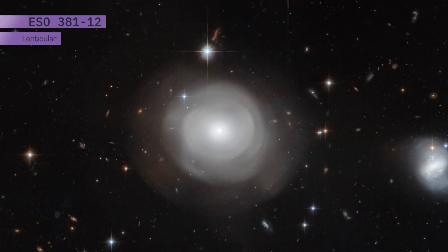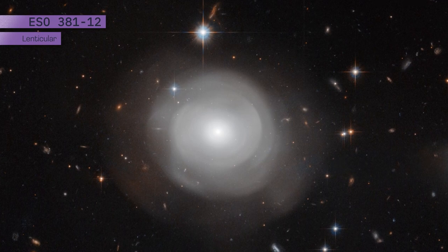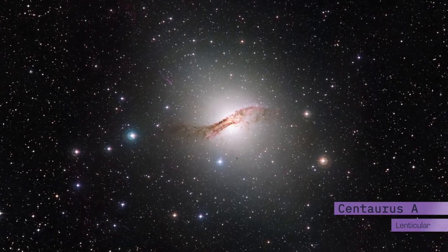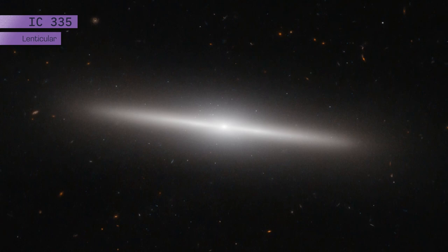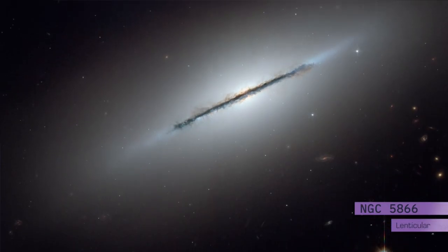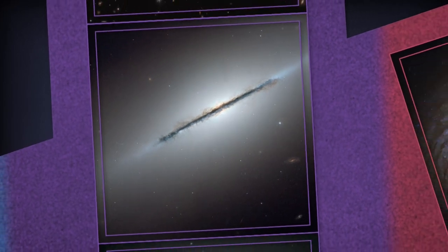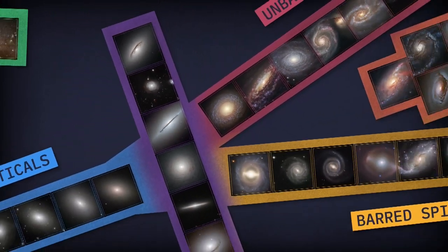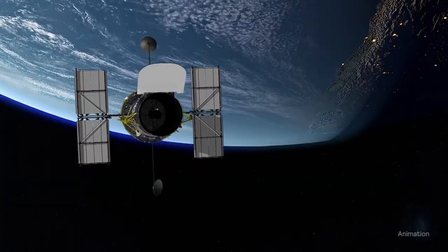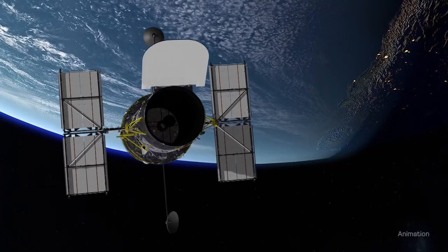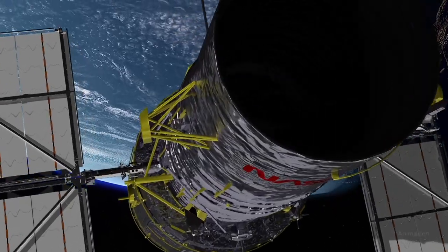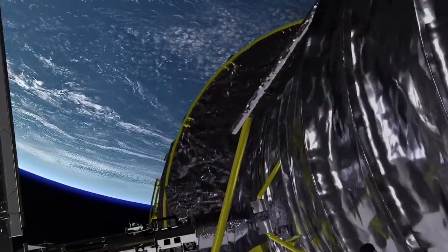Like ellipticals, lenticular galaxies don't have much gas and dust, and also have mainly old stars. When viewed edge-on, their shape resembles a lens, which is why they're called lenticular. Edwin Hubble's tuning fork was a first step in understanding galaxies and how they evolve. Observations by the Hubble Space Telescope will continue to improve our understanding of galaxies and their role in the evolution of the universe.